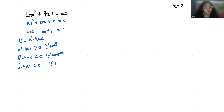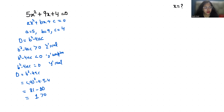Let's find out. The value of b is 9, so we calculate 9 squared minus 4 times 5 times 4: that is 81 minus 80, which equals 1. Since 1 is greater than 0, that means 2 real solutions exist.